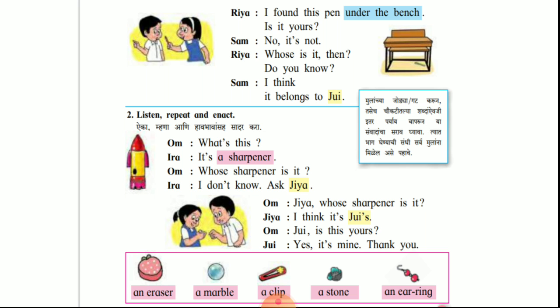Ria: Who's is it then? Maka te kona cha ahe? Do you know? Tula mahi ta hai ka? I think it belongs to Zui. Mala wat te — te Zui che ahe.